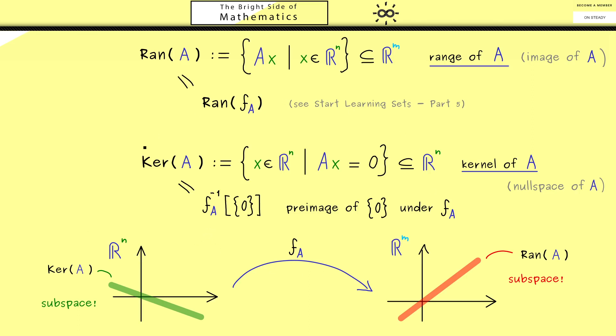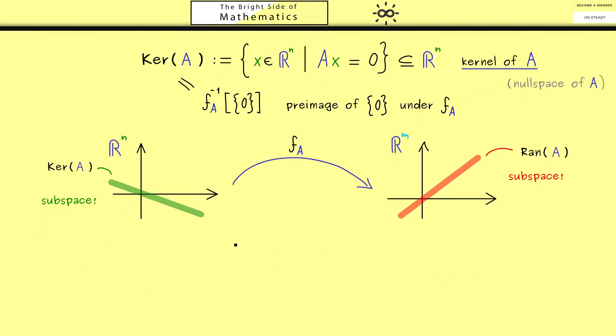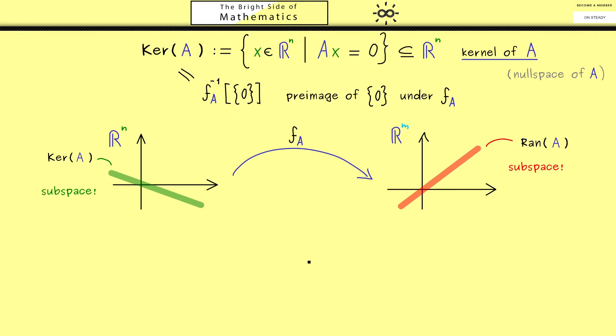If you find all of this too abstract, it's no problem at all. Soon we will have a whole calculation machine where we can calculate a lot of explicit examples. Then you will also see why both notions, kernel and range, are so important for us. However, before we do that, let's first connect the range of a matrix to something we have already defined before in linear algebra.